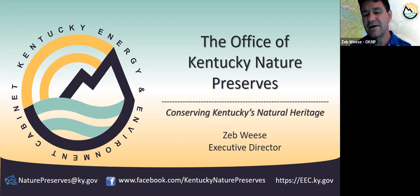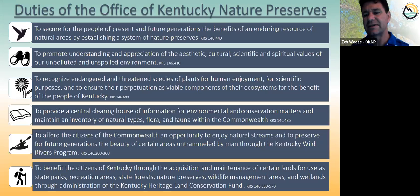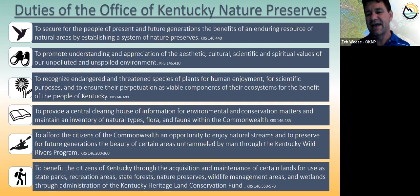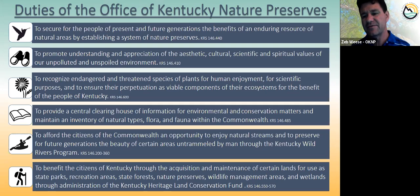Then in 2011, the Office of Nature Preserves program, the Kentucky Wild Rivers program, and the Heritage Land Conservation Fund program were three separate entities in three different agencies - the State Nature Preserves Commission, the Kentucky Division of Water, and the Kentucky Department for Natural Resources. Those programs were pulled out of those agencies and merged into the Office of Kentucky Nature Preserves, and I was the first executive director starting in 2016.